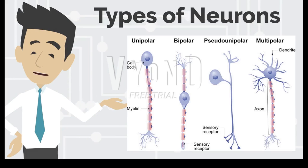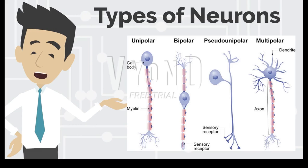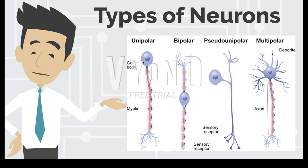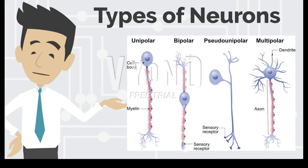There are in fact two types of motor neurons. Those that travel from the spinal cord to the muscles are called lower motor neurons, whereas those that travel between the brain and spinal cord are called upper motor neurons. Motor neurons have the most common type of body plan for a nerve cell — they are multipolar, each with one axon and several dendrites.